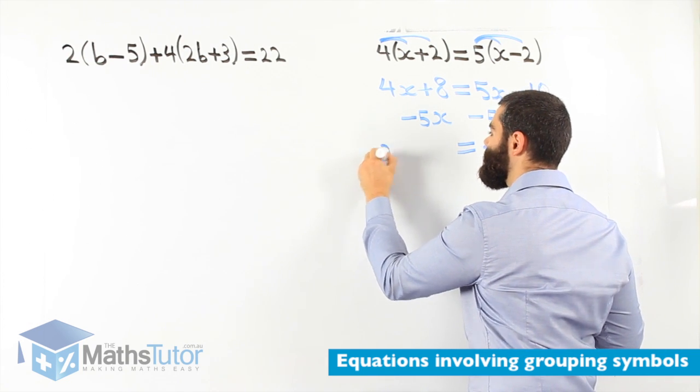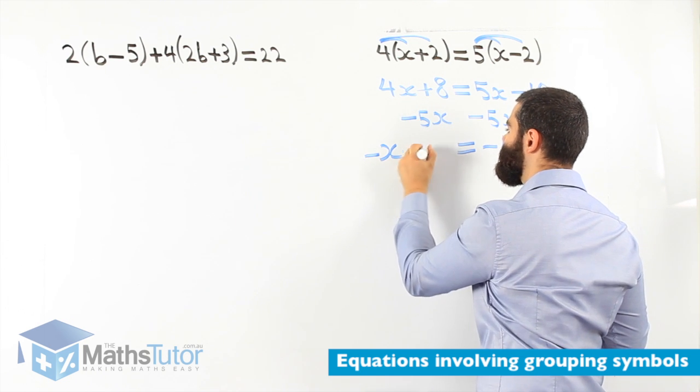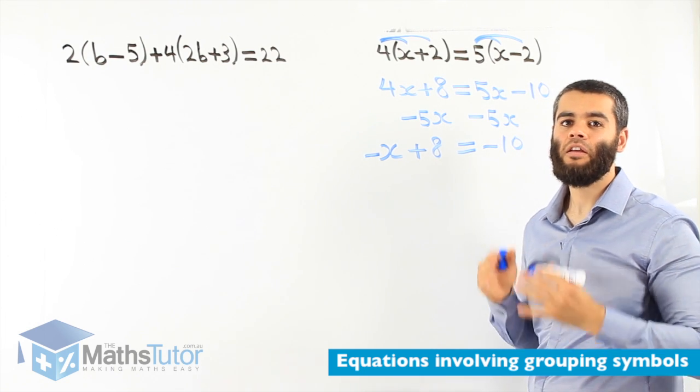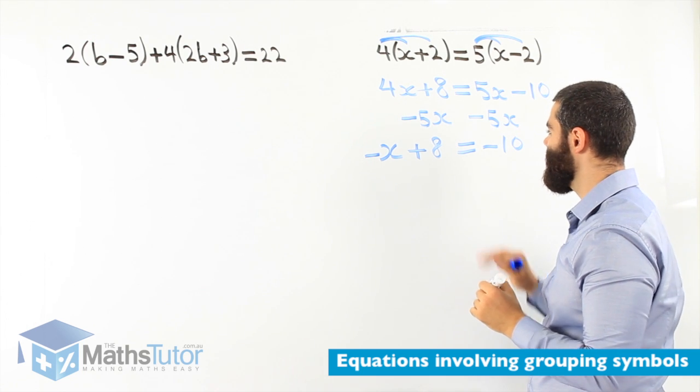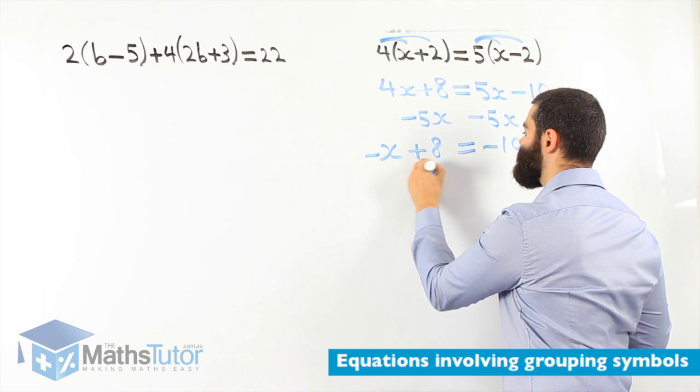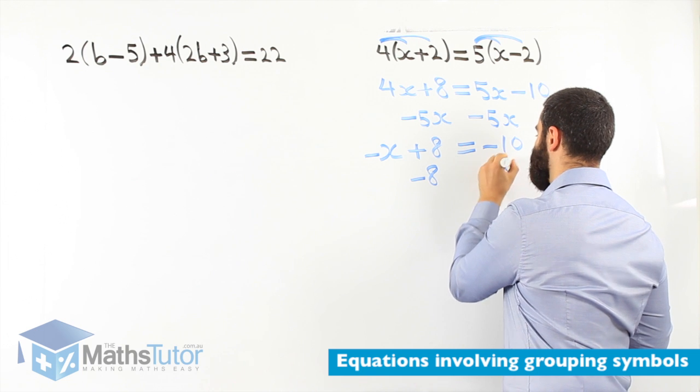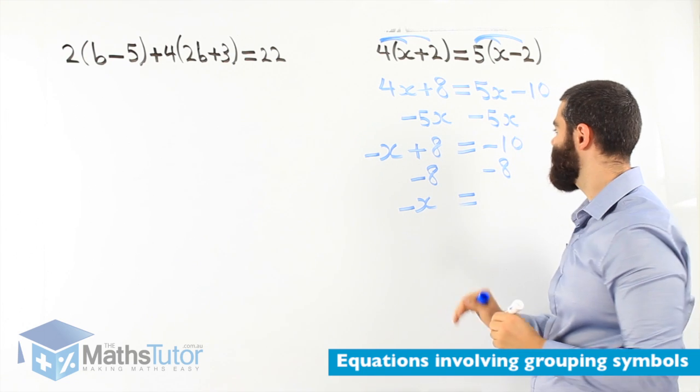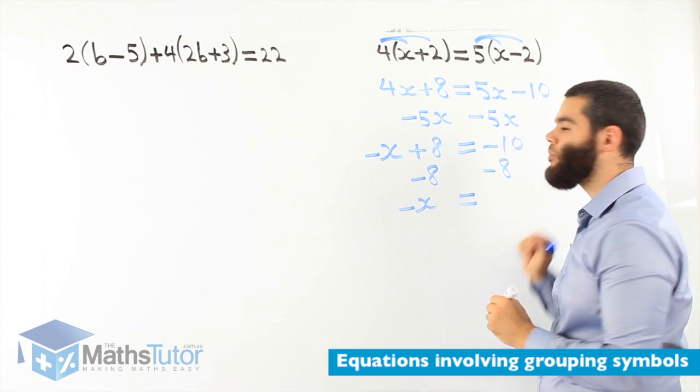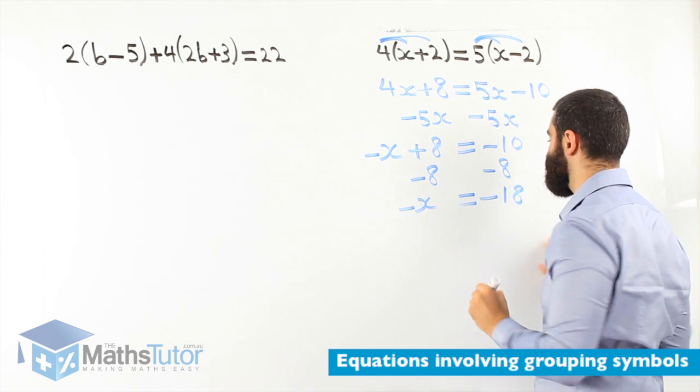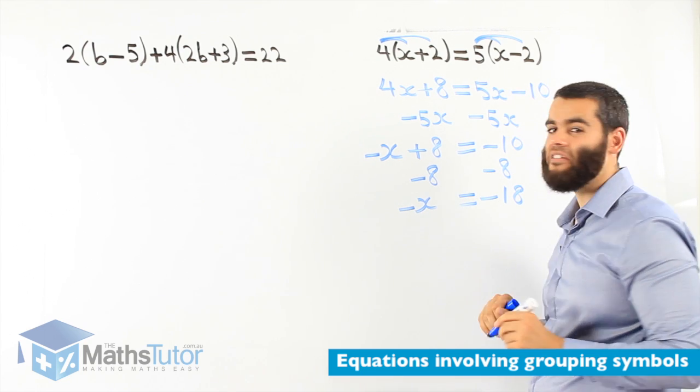So, negative x plus 8. So, negative x plus 8 equals to negative 10. Now, we go and we follow on. We know plus 8 is going to be minus 8 here, minus 8 on the other side. We're left with negative x equals negative 10 minus 8 is minus 18. Negative x equals to minus 18.